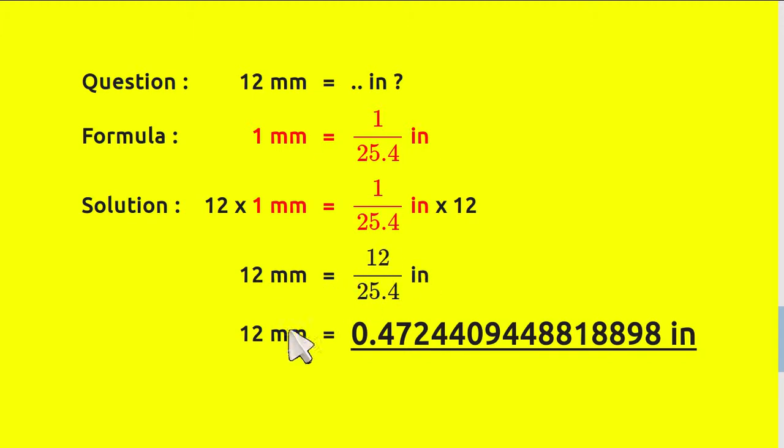Alright, 12 mm equals 12 divided by 25.4 inch, which will give us the result 0.4724. And that's all of it. Thank you so much for watching.